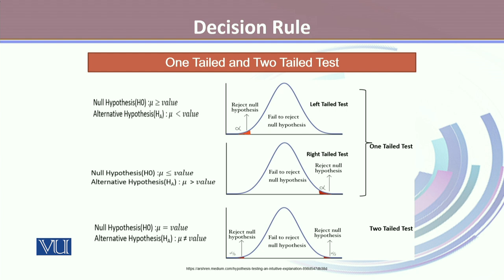Similarly, if our null hypothesis is mu less than or equal to a certain predefined value, against the alternative hypothesis that mu is greater than that predefined value, if we see a greater-than sign in the alternative hypothesis, we are talking about the value being larger than the predefined value. When our interest is in looking at a value larger than the predefined value, we talk about the right-tailed test. Both the left-tailed test and right-tailed test separately are considered as one-tailed tests.